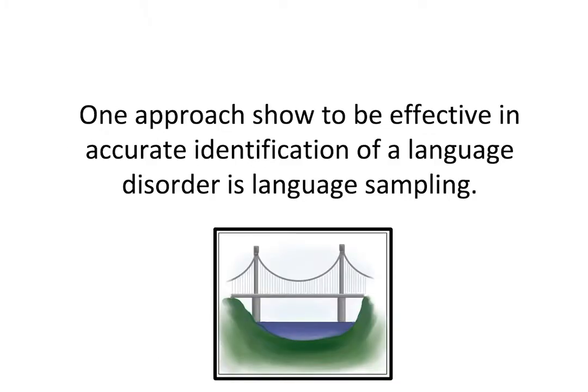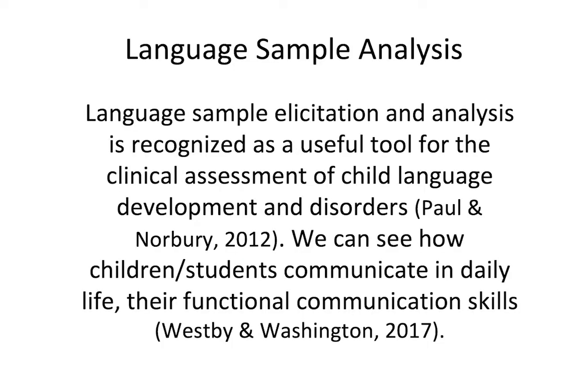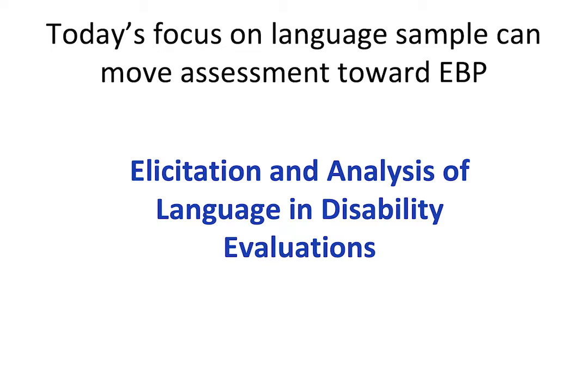One approach shown to be effective — which we'll dive into for the rest of these modules — is accurate identification of a language disorder using language sampling. Language sampling, elicitation, and analysis is a useful tool for clinical assessment of child language development and disorders. It helps us see how a child uses language functionally — not discrete tasks like omnibus tests, but whether they can make inferences, comments, persuasive arguments, and descriptions. And remember from IDEA, we're supposed to assess functional, academic, and natural language.